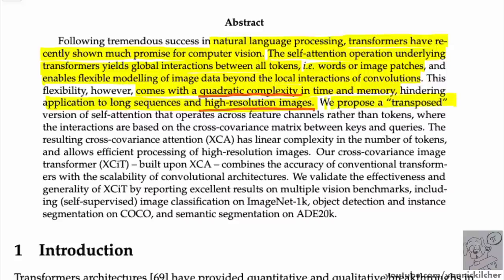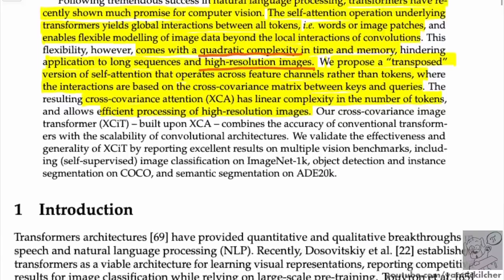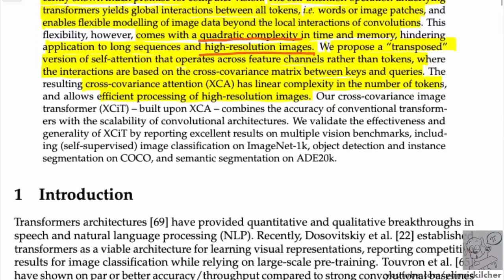They propose a transposed version of self-attention that operates across feature channels rather than tokens, where interactions are based on the cross-covariance matrix between keys and queries. The resulting cross-covariance attention has linear complexity in the number of tokens, allowing efficient processing of high-resolution images. They then propose an entire architecture built upon XCA — the cross-covariance attention — which they call XCiT: the cross-covariance image transformer.